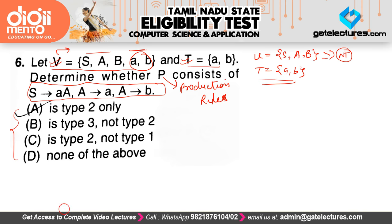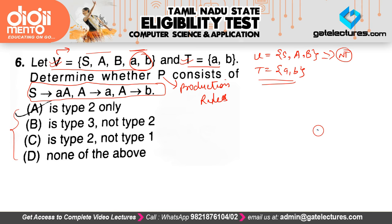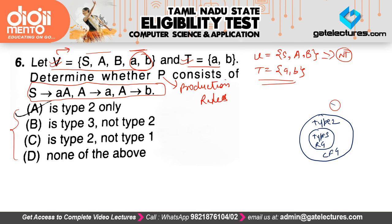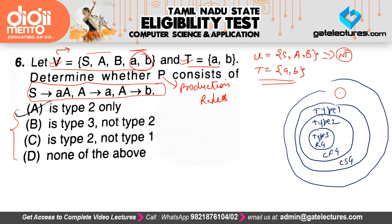There are different types of grammar. Type 3 grammars are also called regular grammars. Type 2 grammars are also called context-free grammars. Type 1 grammars are also called context-sensitive grammars. And Type 0 grammars are also called unrestricted grammars.